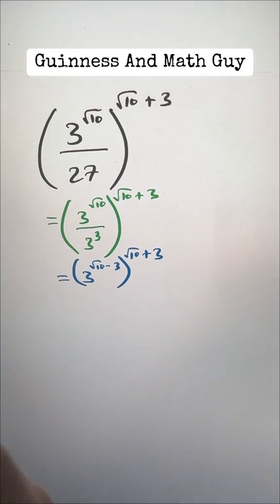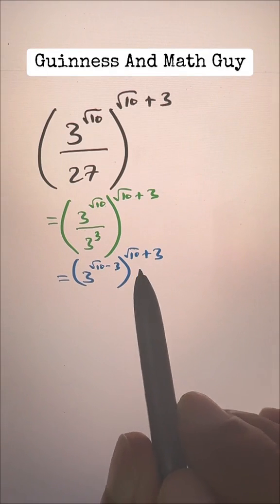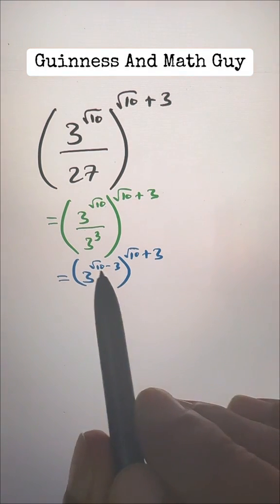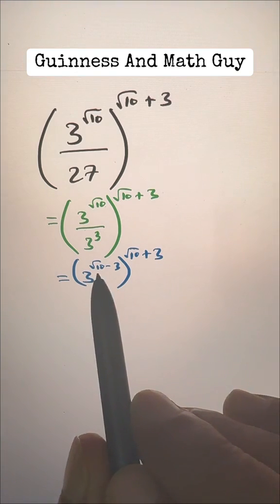Now again the power rules—power of power multiplies. So we have A plus B times A minus B, because root 10 plus 3 times root 10 minus 3.